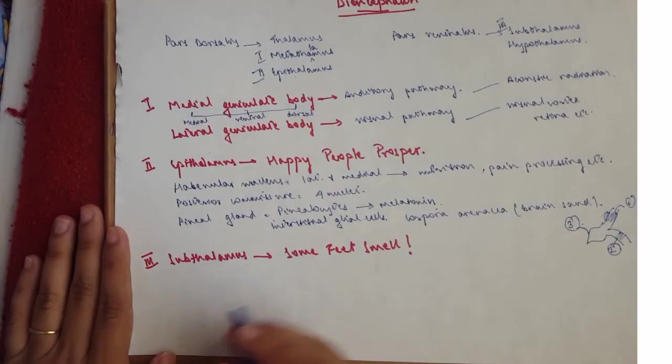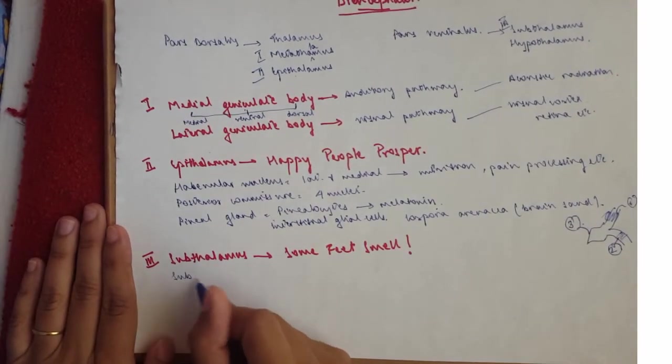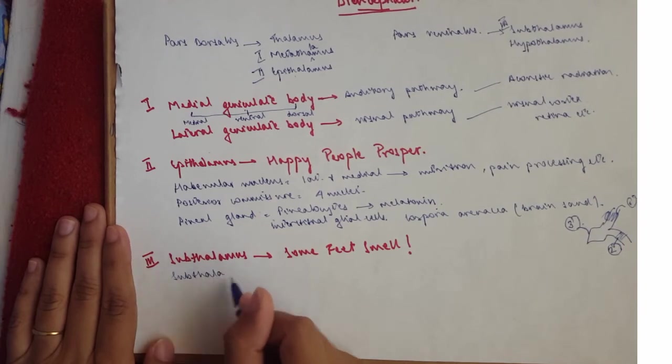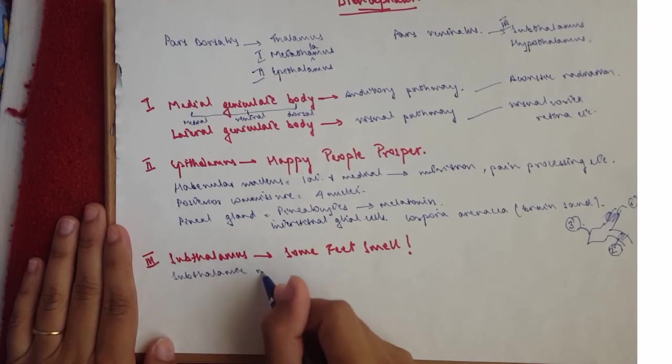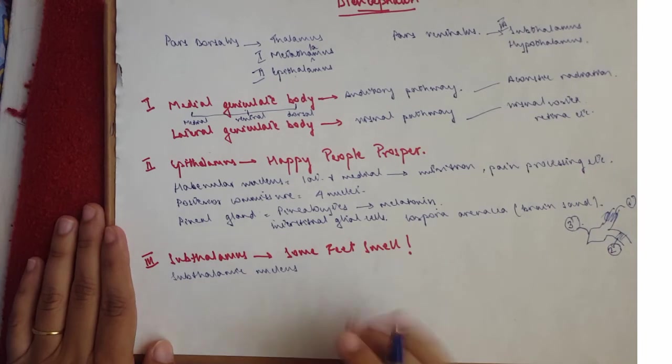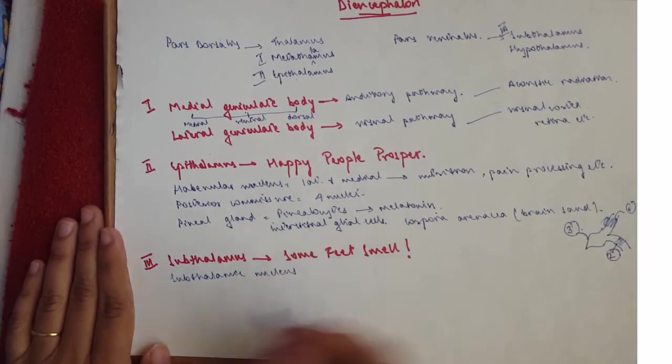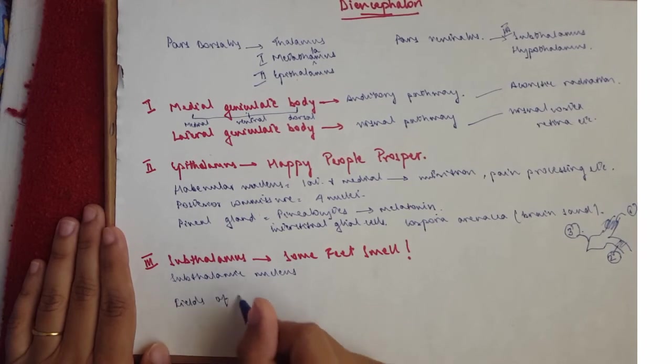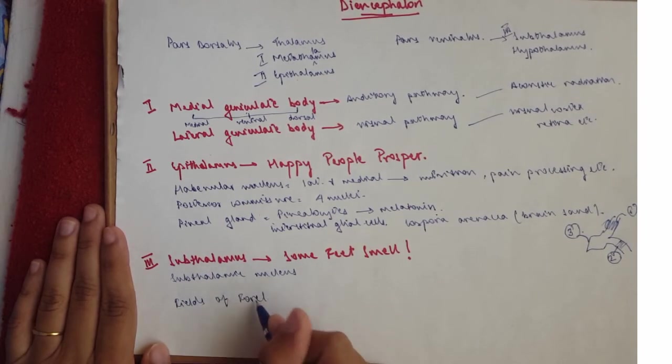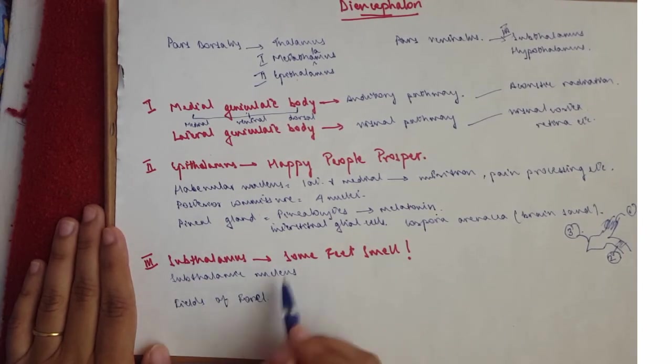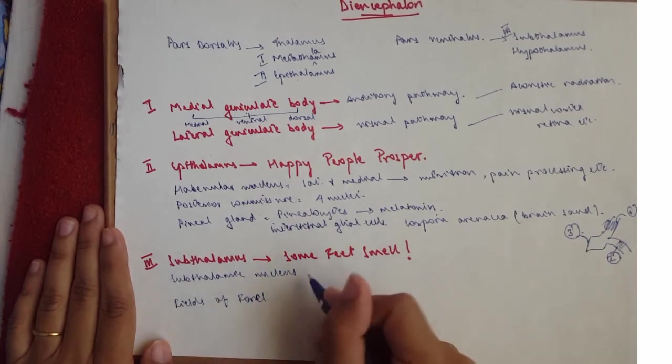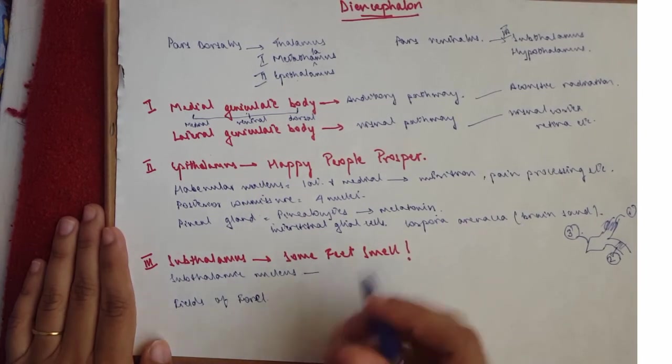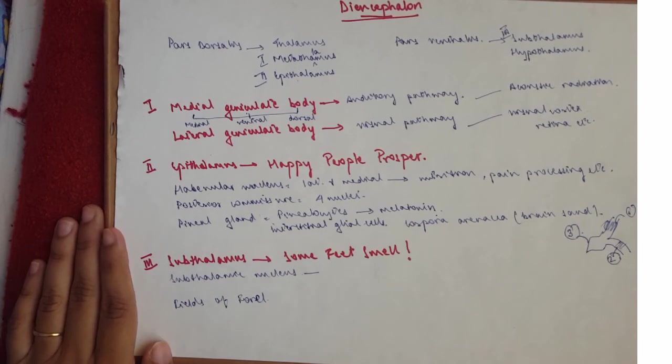Now for Some, you've got the subthalamic nucleus. For F, you've got the fields of Forel. And for S again, you've got something called the subthalamic fasciculus. So I'm going to write it here. I'll write it later on.